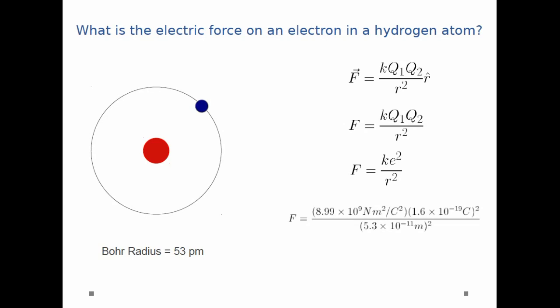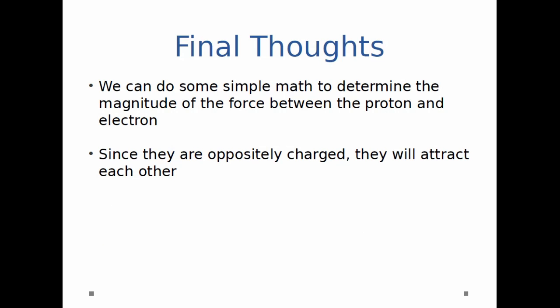I can plug in the values. So K is equal to 8.99 times 10 to the 9. E is equal to 1.6 times 10 to the minus 19. And R is just the Bohr radius, 5.3 times 10 to the minus 11. And so when you plug all that in, you get 8.2 times 10 to the minus 8 newtons.